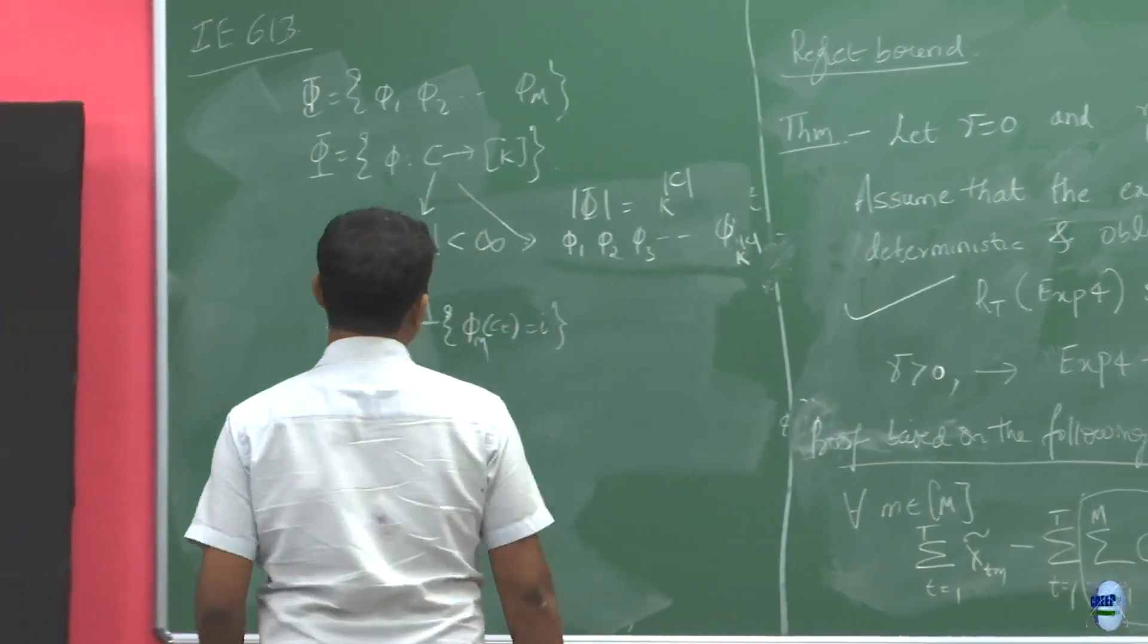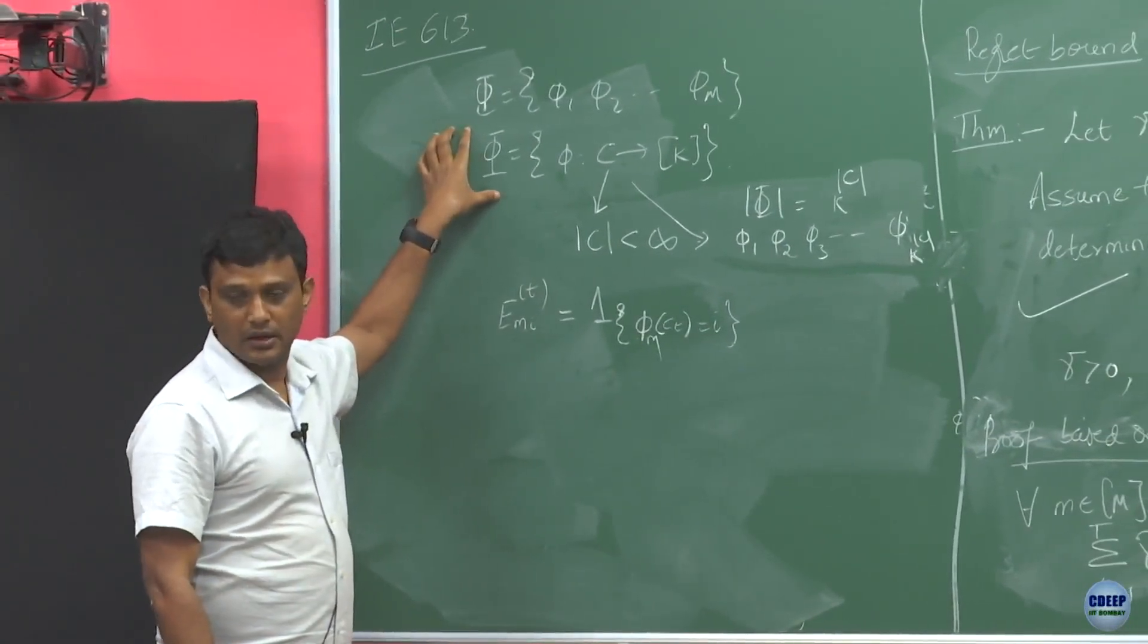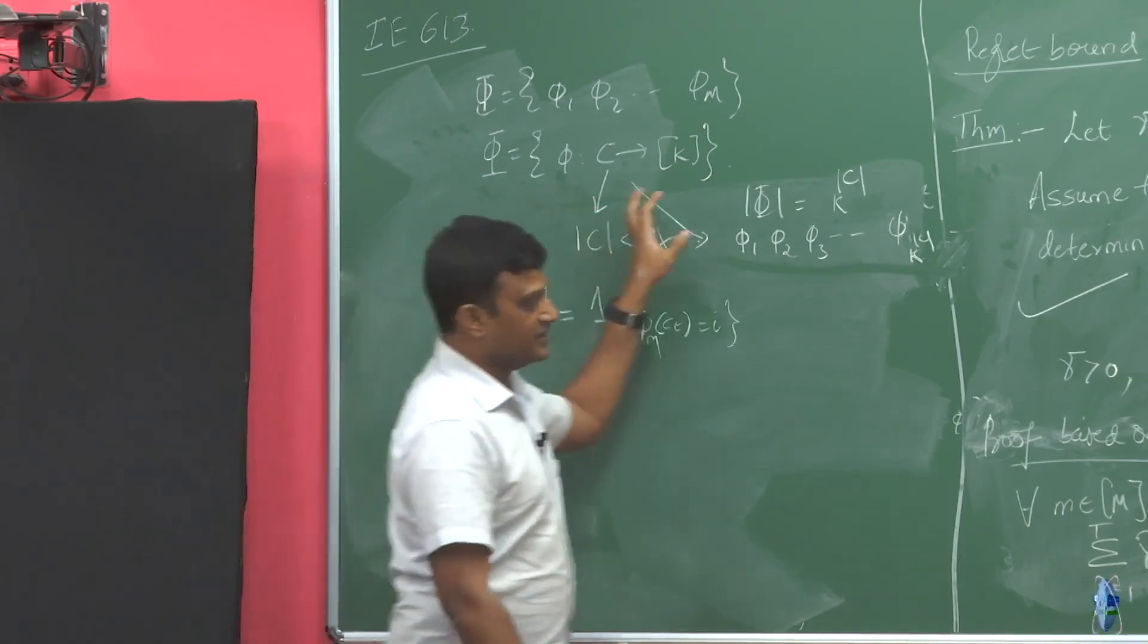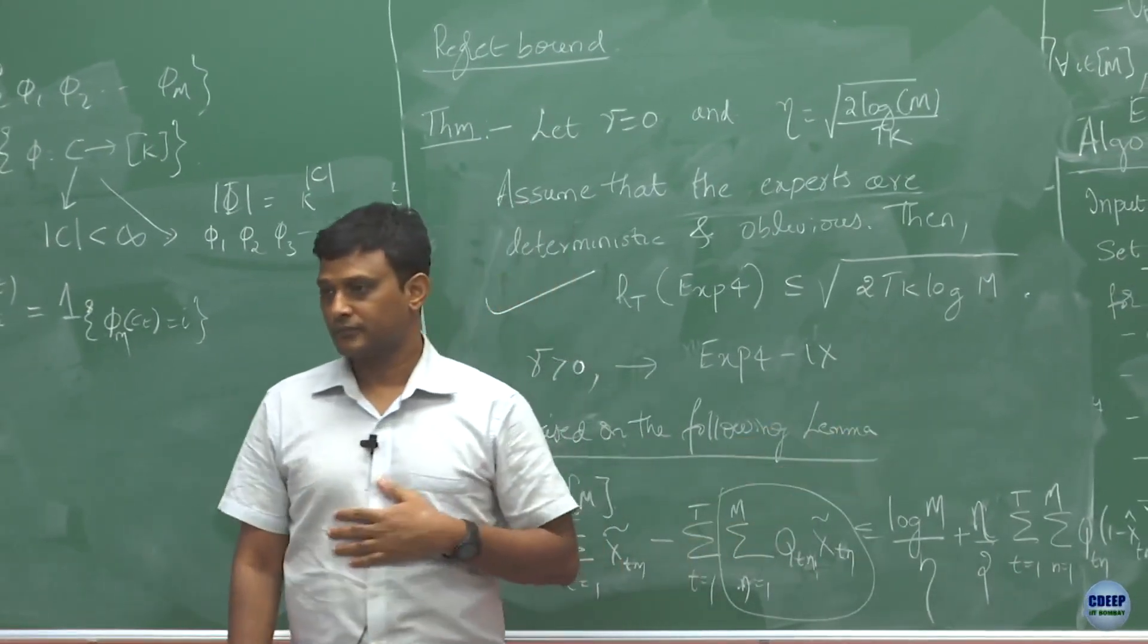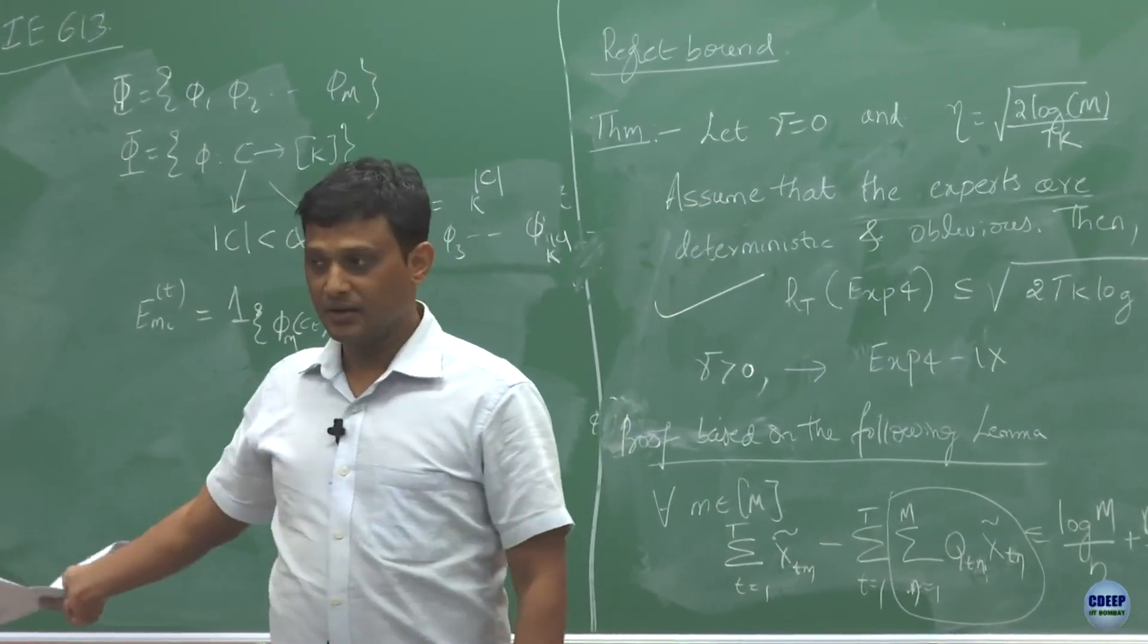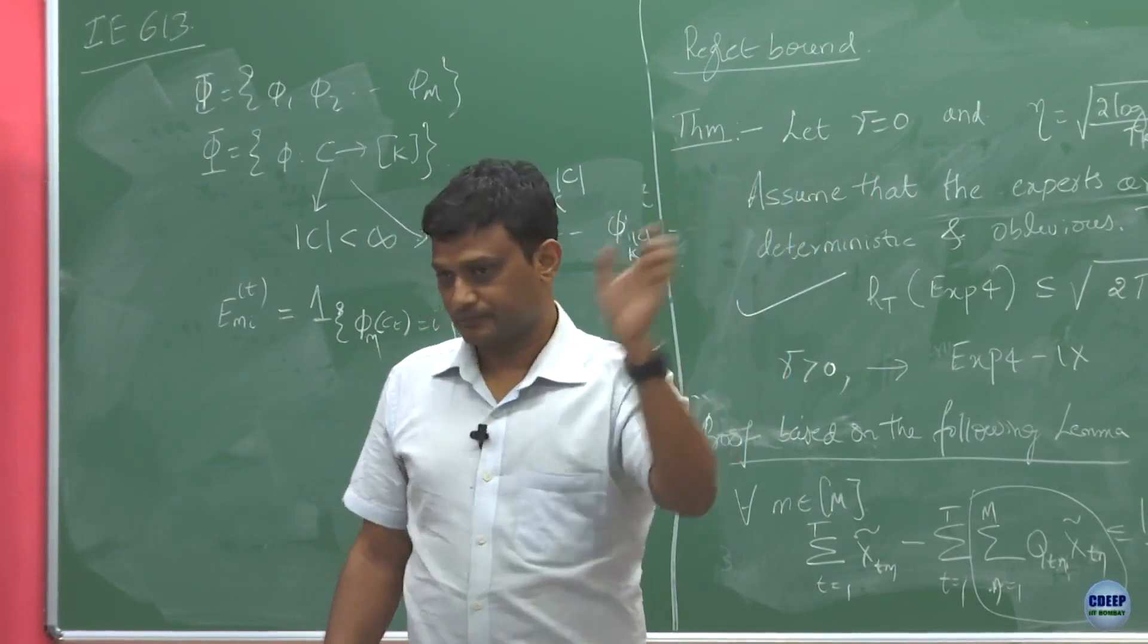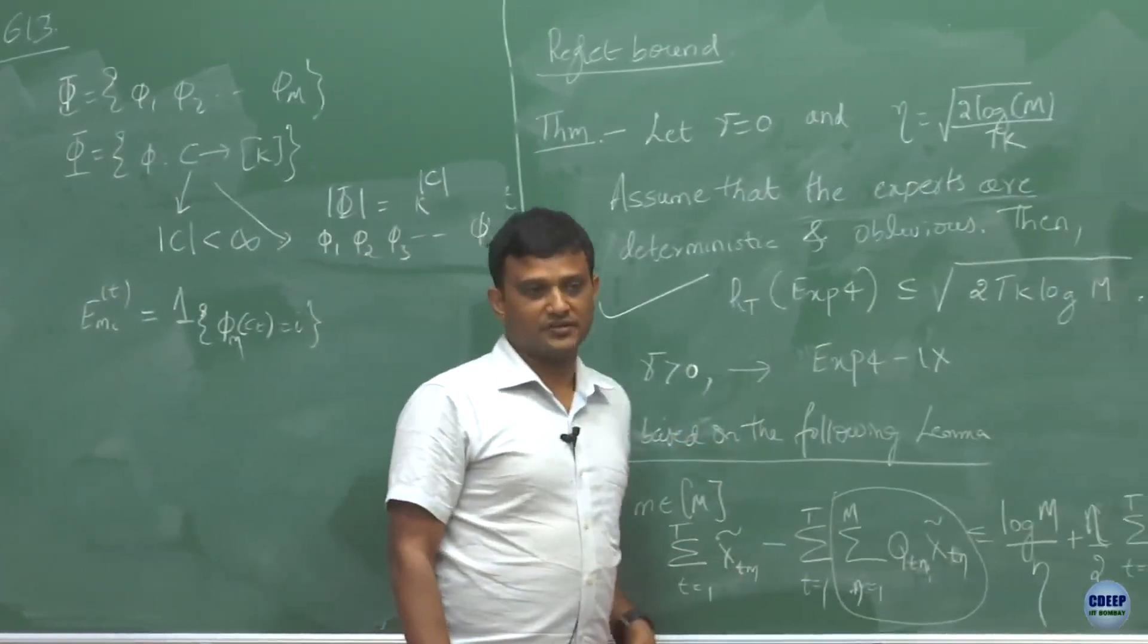In that way I can treat all the maps here as different experts, and we are already in this setup where I am going to set my ET function E_MI to be exactly like this based on what map I am going to use in that round. Now then even if I define my regret in terms of these policies, all possible phis, this regret bound still applies. The experts are nothing but these maps here, and even though they are not giving distributions, I can treat that as a distribution.